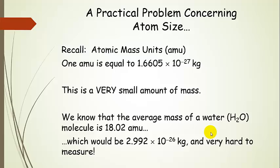We talked about those just a little while ago. One AMU, or one atomic mass unit, is equal to 1.6605 times 10 to the negative 27 kilograms. Notice how small an amount of mass that is. And we know that the average mass of a water molecule is 18.02 AMU, and that would be only 2.992 times 10 to the negative 26 kilograms, which would also be very, very hard to measure.